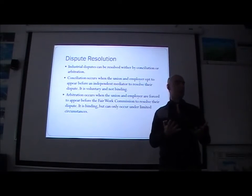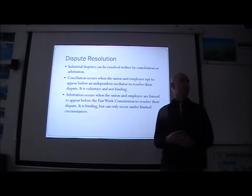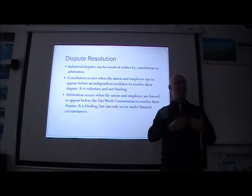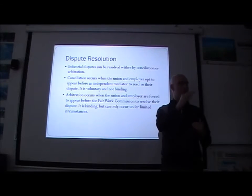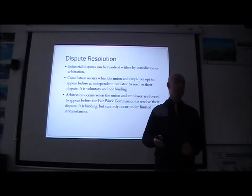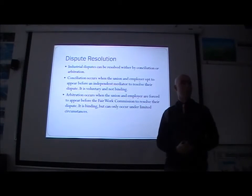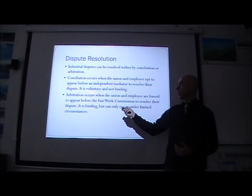For example, a union is asking for a 10% pay rise over two years while the employer is offering 9% over three years — roughly 3% per year. They may go to conciliation, and the mediator might suggest the union accepts the 3% per year but the employer provides additional payment for education and training to upskill the workers. The union may accept that, recommending members vote in favour. So it is voluntary and not binding — the union could still decide they want the pay rise instead.